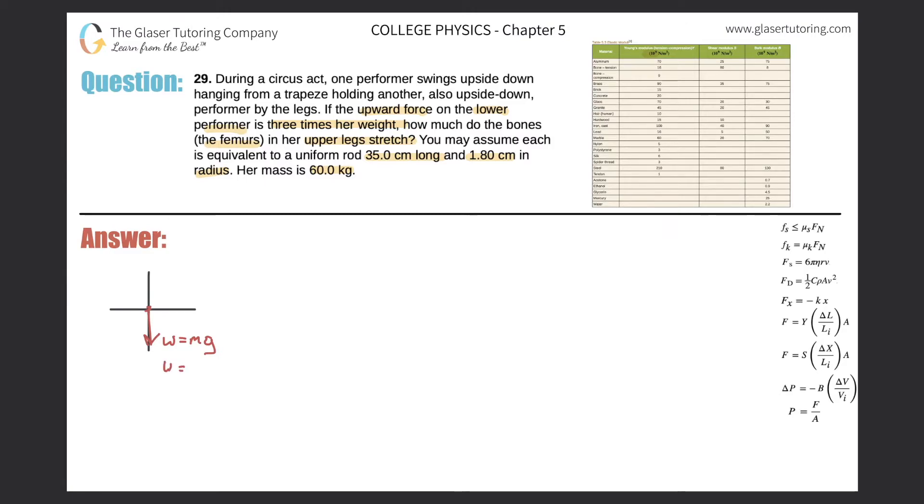Let's just bang out the weight here. It's going to be 60.0 times 9.80. So the weight is going to be 60 times 9.8, 588. So this is 588 newtons.